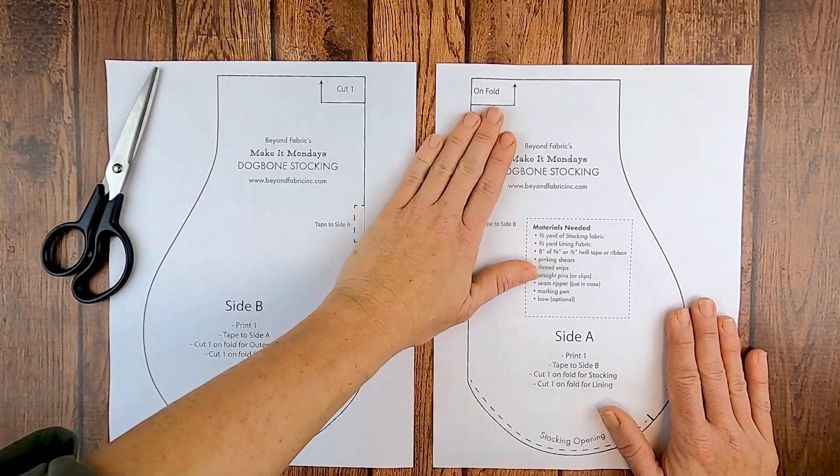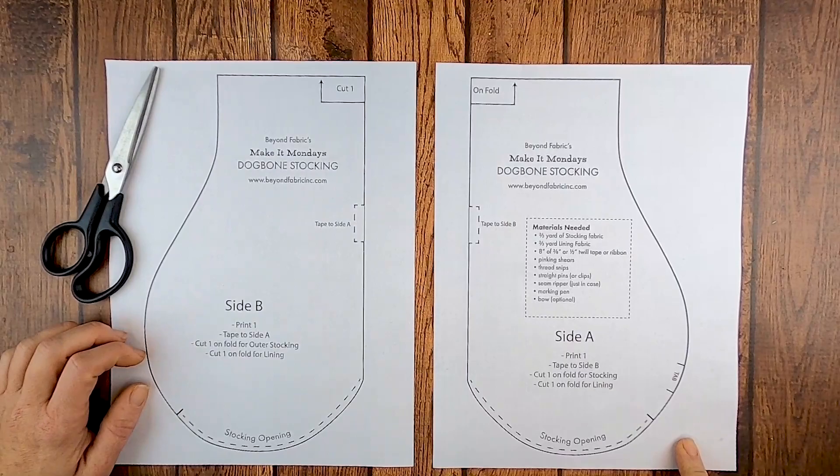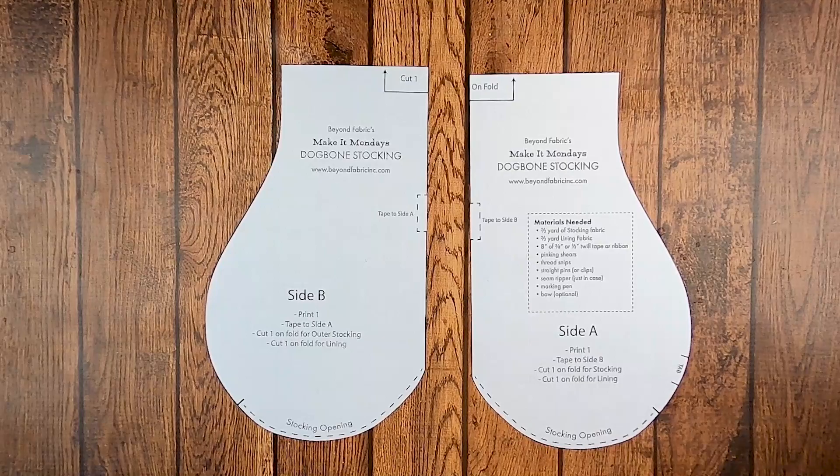So what I'm going to do right now is take my scissors and just cut around the outline of each of these two pieces, so I'll have side A and side B, and then I will meet you back here in just a moment.